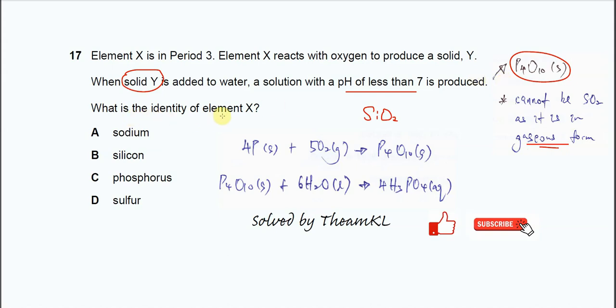So what is the identity of element X? The answer is C. These are the equations. When phosphorus reacts with oxygen, it will form phosphorus oxide solid. The solid will dissolve and react with water to form phosphoric acid. So this is the equation. That's why element X must be phosphorus, not sulfur.